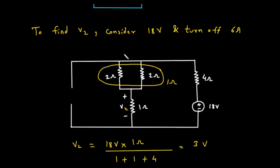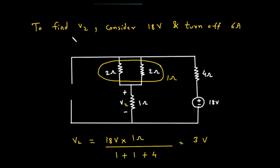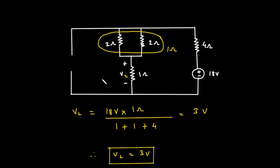We've found V1. Now for the second part — finding V2. This time, we keep the 18-volt voltage source active and turn off the 6-amp current source. Remember: to turn off a current source, we set its current to zero, replacing it with an open circuit — a gap or break in the wire. So we redraw the circuit: the 18-volt source and 4-ohm resistor are on the right, the 2-ohm and 1-ohm resistors are in the middle, but on the left, where the 6-amp source was, there is now just an open gap. Because of this open circuit, no current can flow in that entire branch.